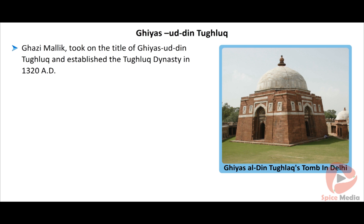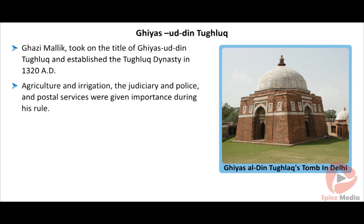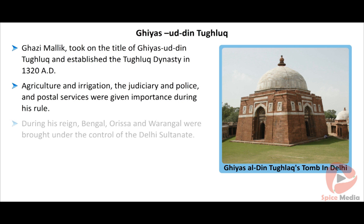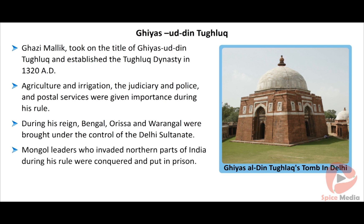He was an able administrator who rose to the position of a sultan through sheer hard work. Agriculture and irrigation, the judiciary, police and postal services were given importance during his rule. Bengal, Orissa and Varangal were brought under the control of the Delhi Sultanate. Mongol leaders who invaded northern parts of India during his rule were conquered and put in prison.